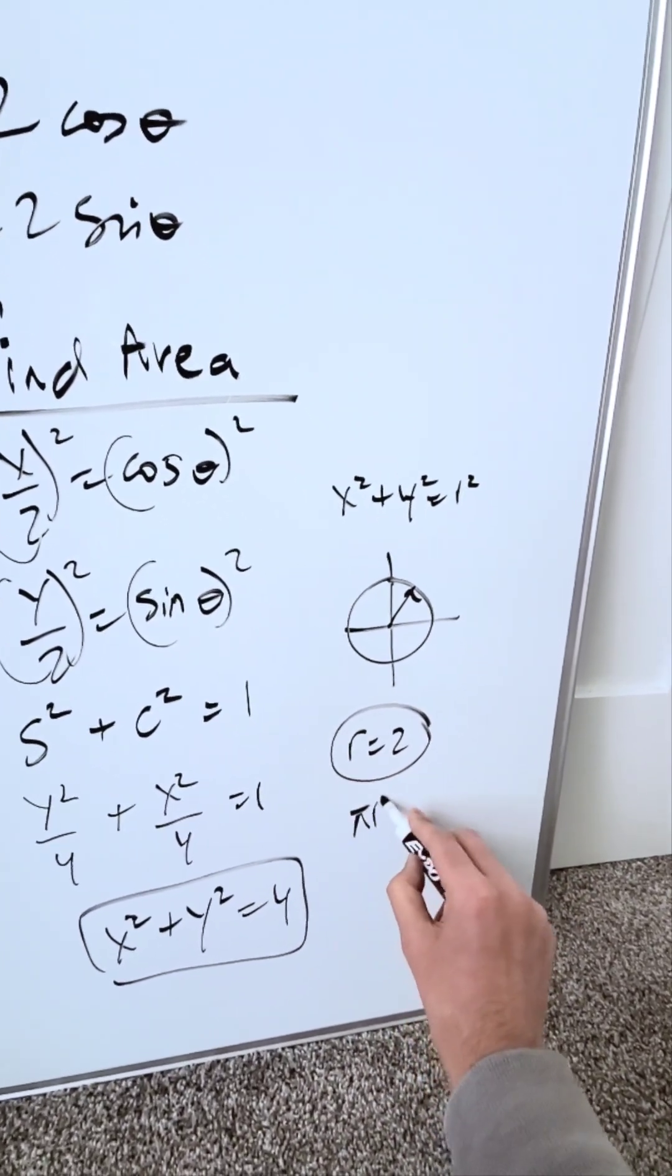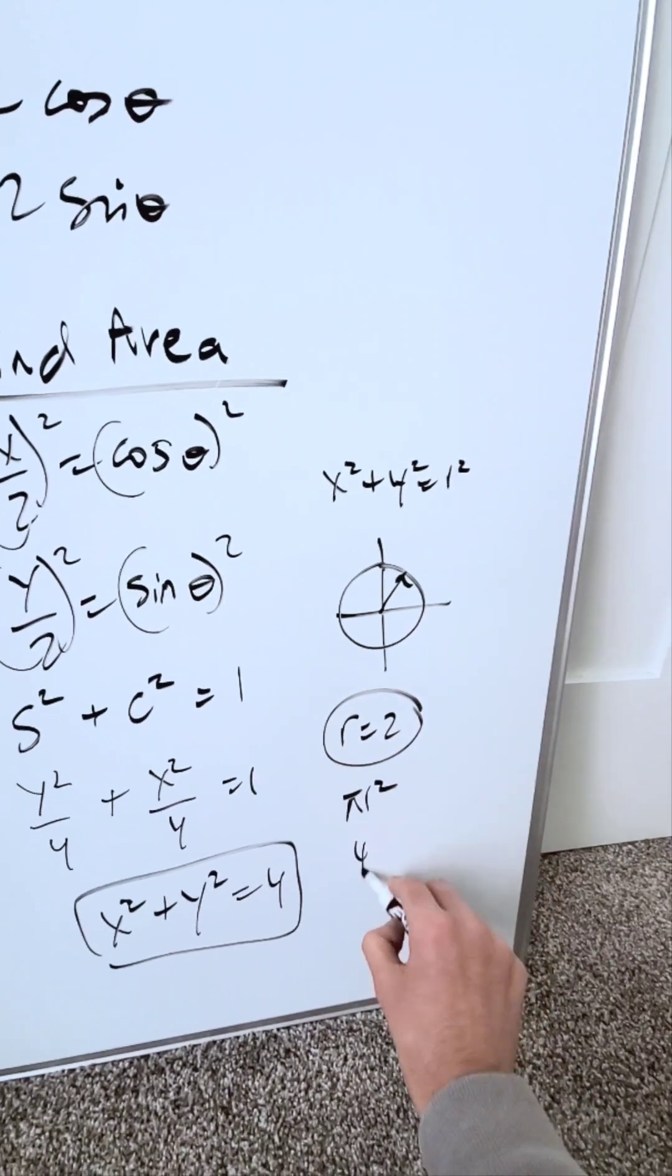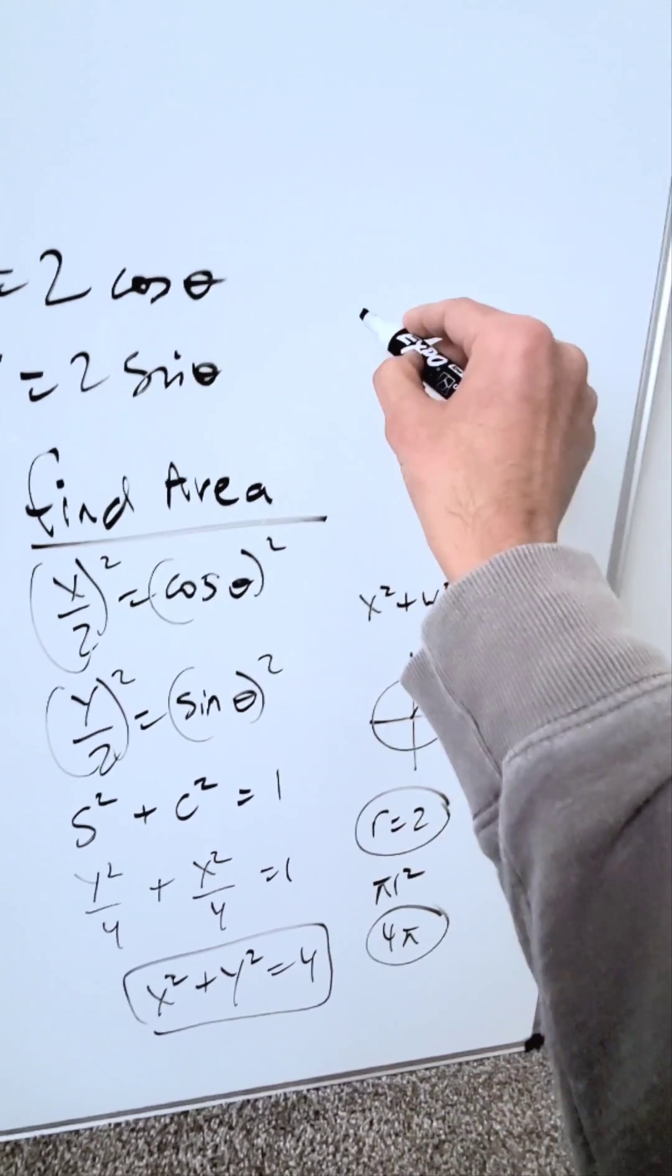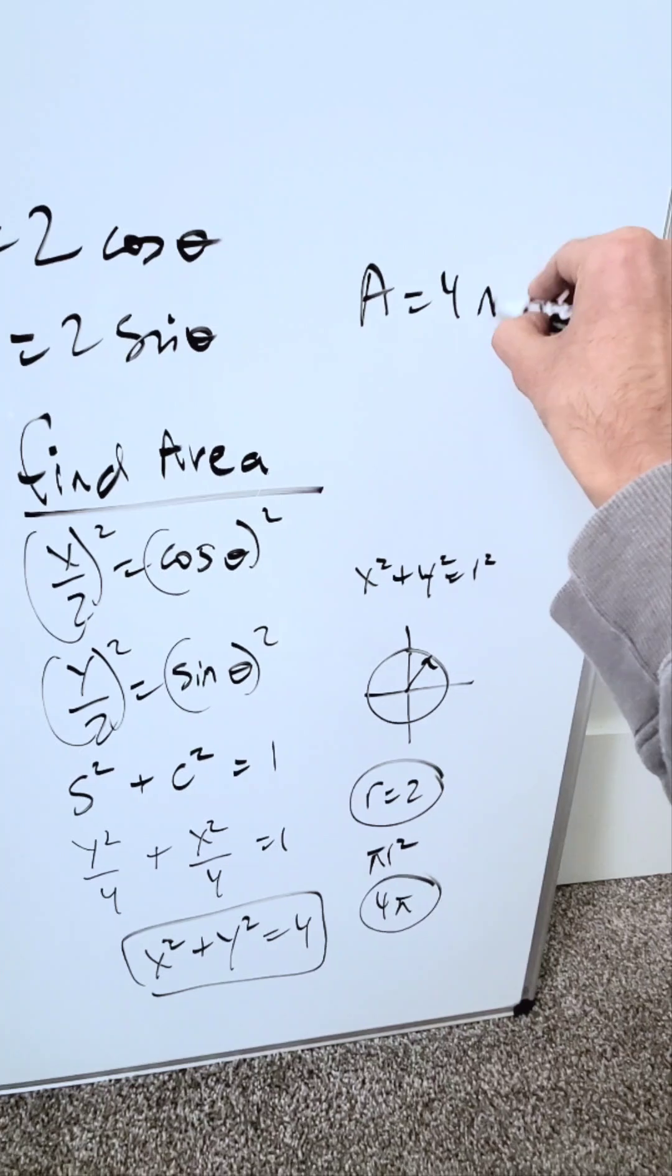Area of a circle is pi r squared. I'll have pi times 2 squared, and my area representation is 4 pi. That will be your correct answer, 4 pi.